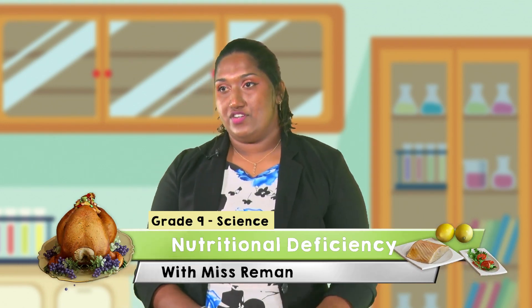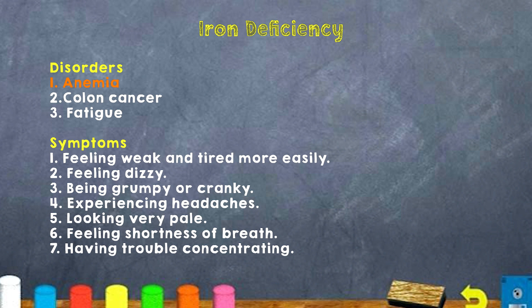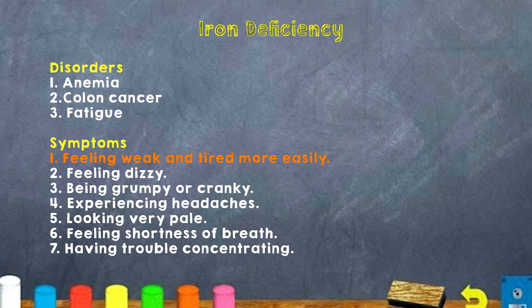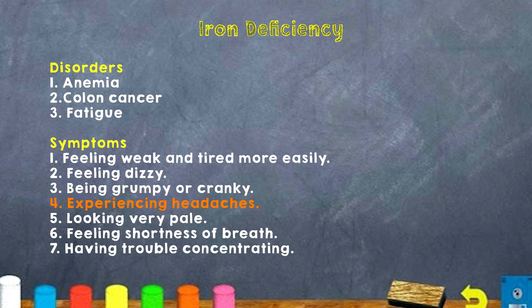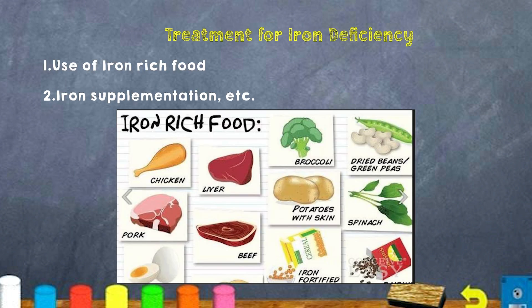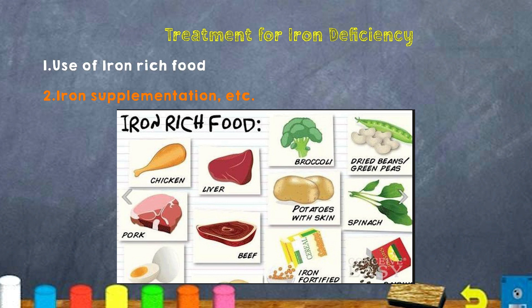Next, we look at iron deficiency. Disorders associated with iron deficiency include anemia, colon cancer, and fatigue. Symptoms include feeling weak and tired, dizziness, being grumpy or cranky, headaches, looking very pale, feeling short of breath, and having trouble concentrating. To treat iron deficiency we can use iron-rich foods or take iron supplements. Iron-rich foods include chicken, liver, broccoli, potato with the skin, beef, and egg yolk.